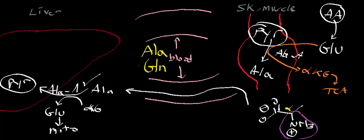Now we have pyruvate in the liver. In order to get glucose back to the skeletal muscle, gluconeogenesis is going to occur. Pyruvate is converted back to glucose through gluconeogenesis. In the mitochondria of the hepatocytes, the pyruvate must first react with pyruvate carboxylase to form oxaloacetate, then it can be converted to phosphoenolpyruvate by phosphoenolpyruvate carboxykinase, and PEP is transported back out into the cytosol where gluconeogenesis occurs.